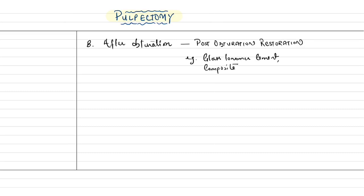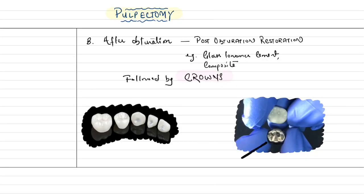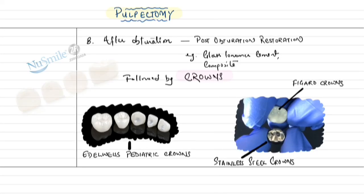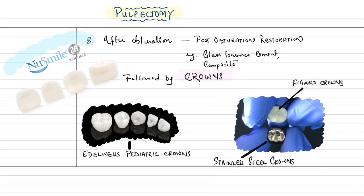The choice of obturation material is at the clinician's discretion. After obturation, the eighth step is post-obturation restoration using glass ionomer cement, composite, or any biocompatible restoration, followed by crowns. Crown options include stainless steel crowns (most preferable), Figaro crowns, Edelweiss pediatric dental crowns, and zirconia crowns.